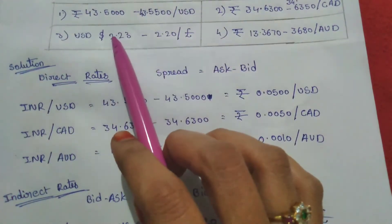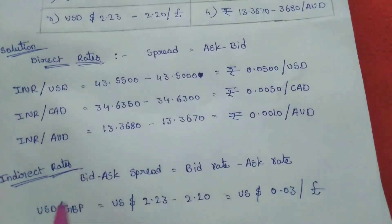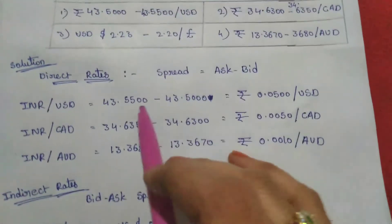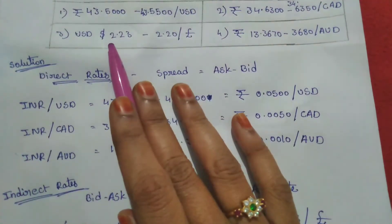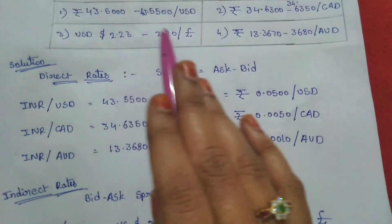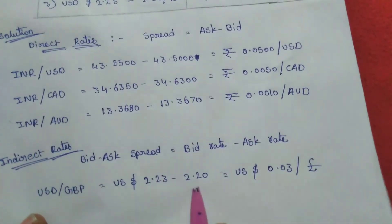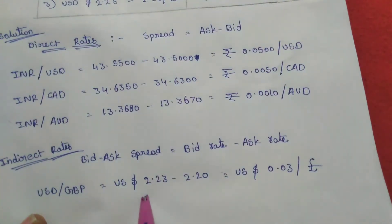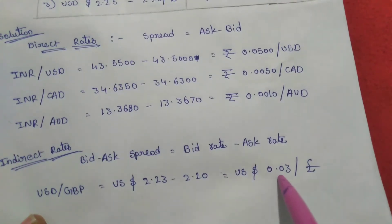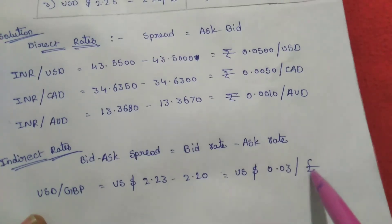For the third quotation, this is an indirect quote, so the bid-ask spread formula is: Bid Rate minus Ask Rate. In an indirect quote, the bid rate is higher than the ask rate. Here, Spread = 2.23 minus 2.20 = 0.03 US dollars per one unit of British pound.